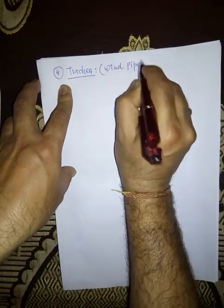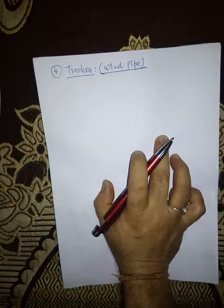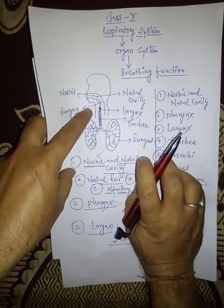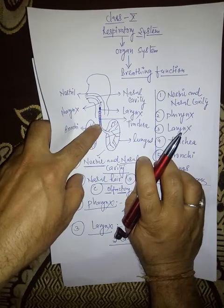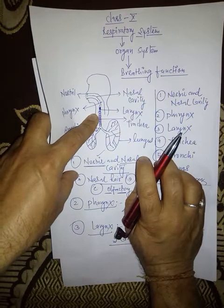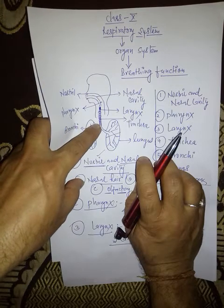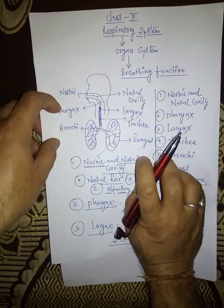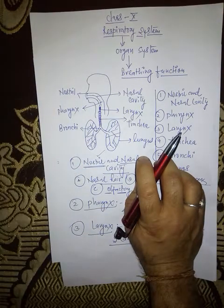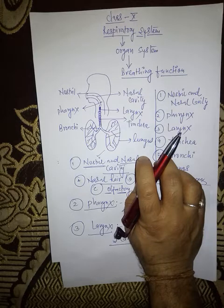Trachea is also known as the windpipe. The larynx part is posteriorly opened into the trachea. So the posterior part of the larynx is opened into a hollow tubular muscular structure. This is called the trachea or windpipe. The outer wall of the trachea is covered by C-shaped cartilaginous rings.